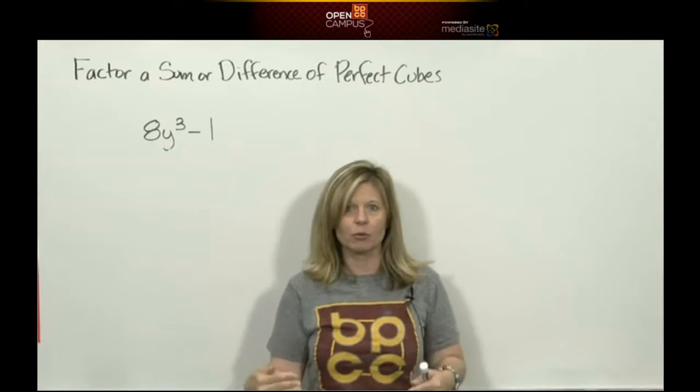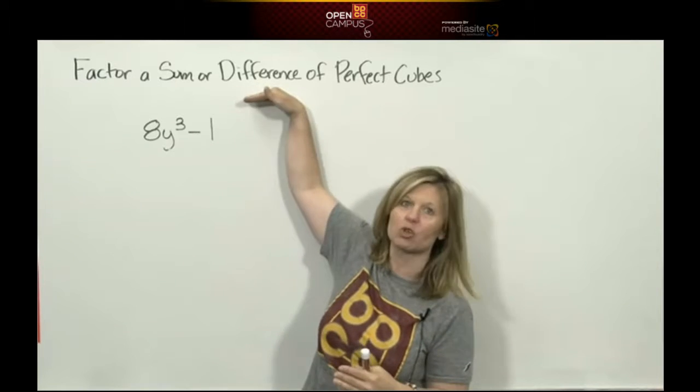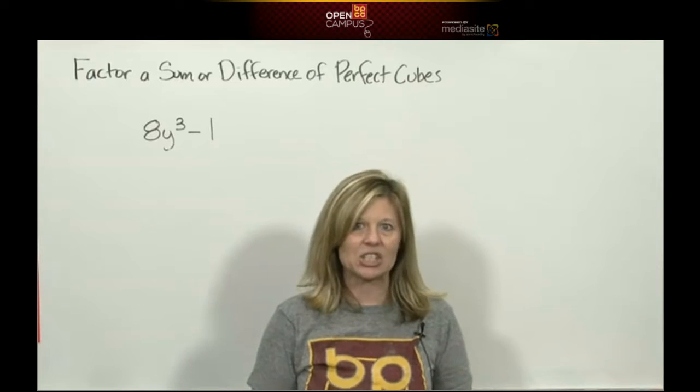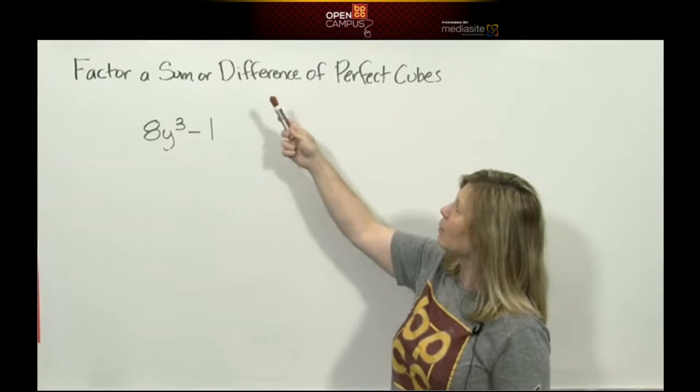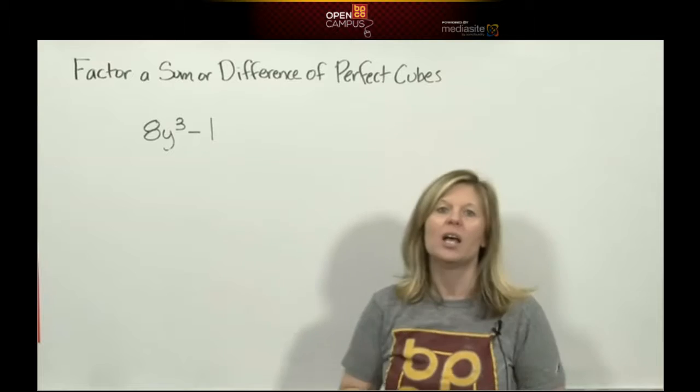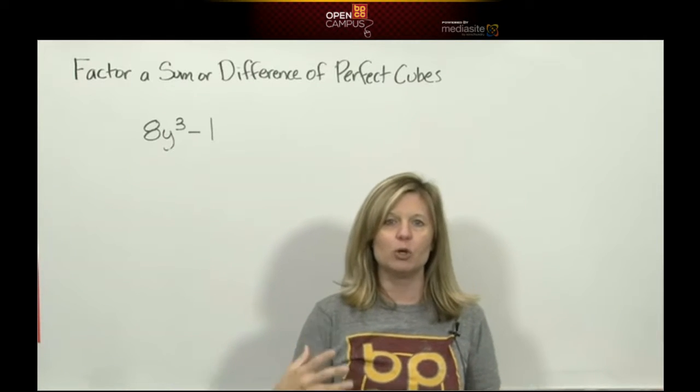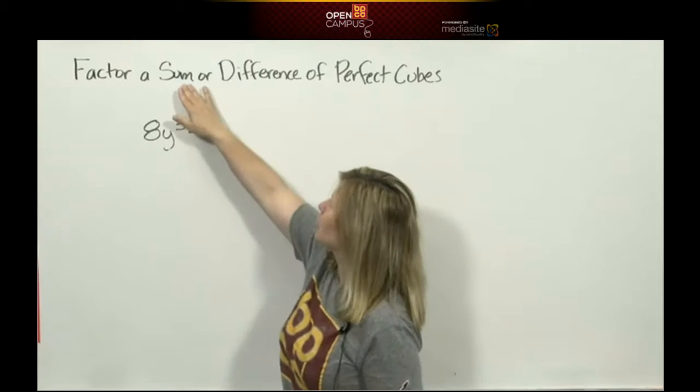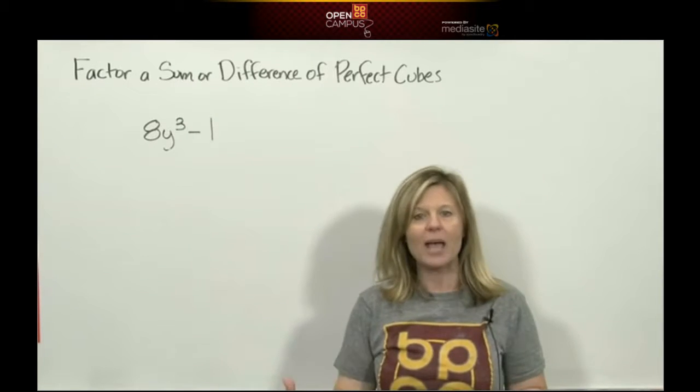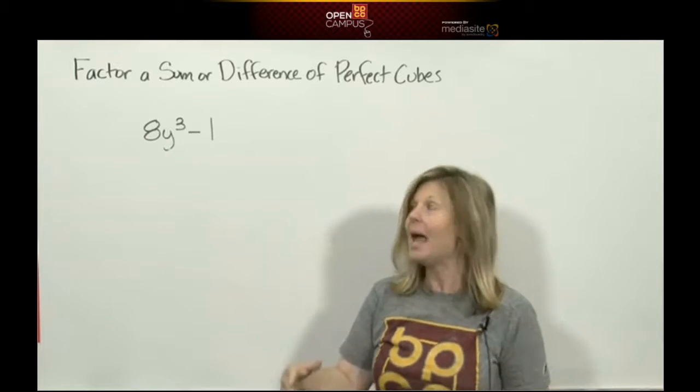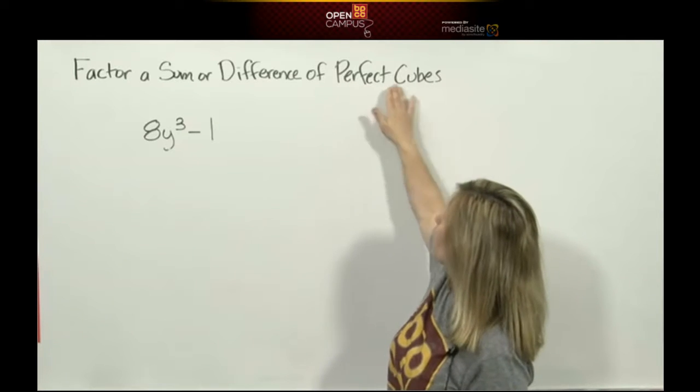So that means on my list of rules of factoring I leave this rule last because it's the one that's used the least. And the rule's name is sum or difference of perfect cubes. Again this rule means you need a binomial, two terms connected by either adding or subtracting. Well we have that. I have two terms connected by subtraction. Now I've got to make sure all my terms are perfect cubes.